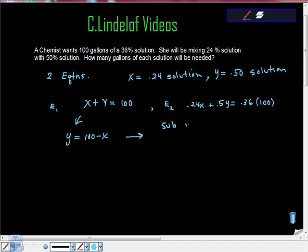Then I'm going to substitute it into this equation. So sub into second equation E2. That's 0.24X plus 0.5, and here we have Y, but we know that Y is equal to 100 minus X. And if you're sitting there going why would you do that? Because it's very, very hard, impossible to solve equations in two variables.